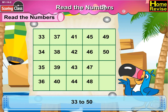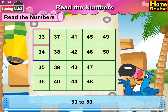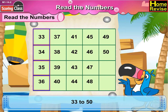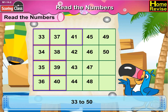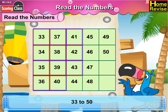Say thirty-three to fifty. That would be: thirty-four, thirty-five, thirty-six, thirty-seven, thirty-eight, thirty-nine, forty, forty-one, forty-two.